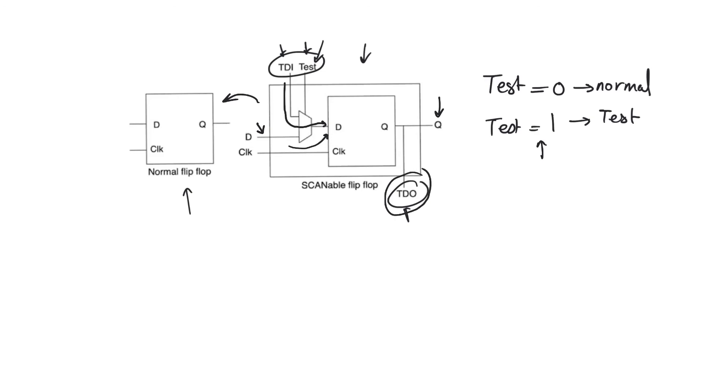So it looks like the difference between the scannable flip-flop in test mode and in normal mode is just that we are picking TDI when test mode is equal to one, and we're picking D when test mode is equal to zero. And this is true. The only thing about the scannable flip-flop is that it can pick between two inputs, TDI and D. So its output can be either or, and the way we pick is through the mode signal test. So that's a very minor difference.